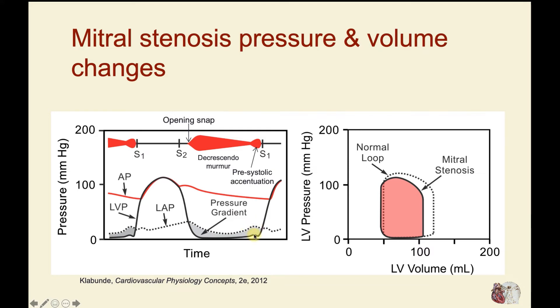You may again hear a pre-systolic accentuation of the murmur, because this is where the a-wave occurs — atrial contraction. An additional amount of blood goes into the ventricle, and that may generate this pre-systolic accentuation.